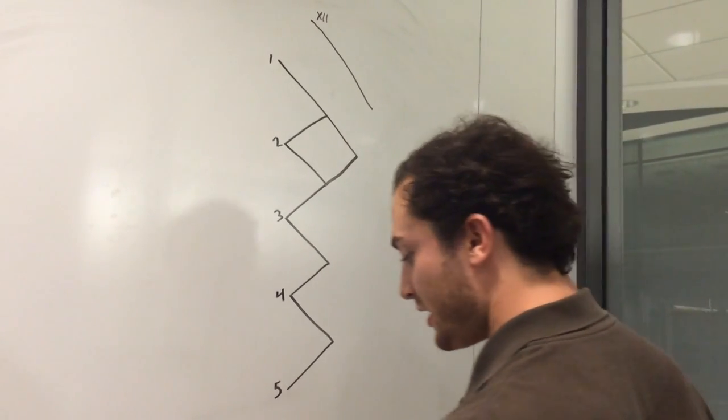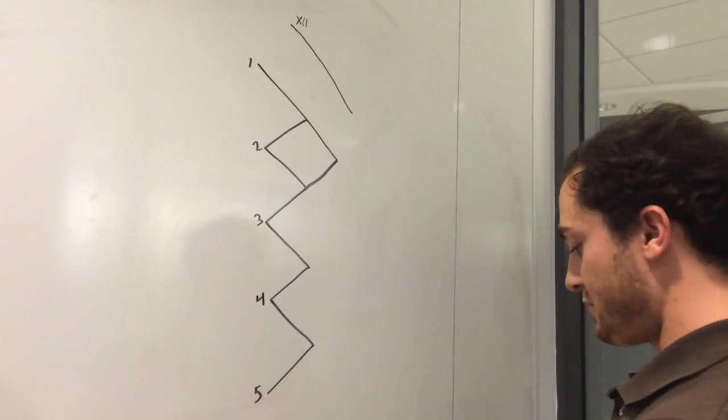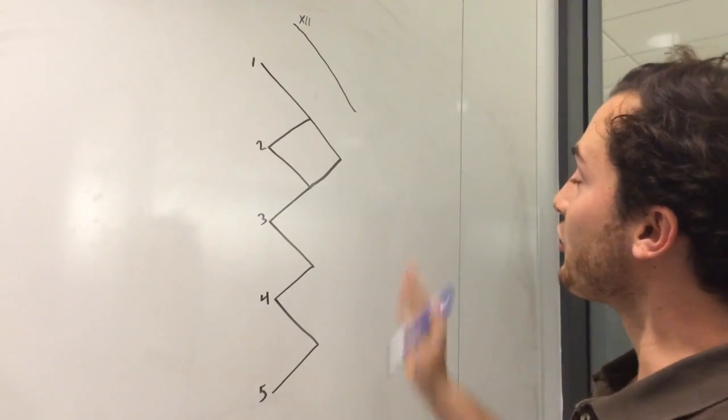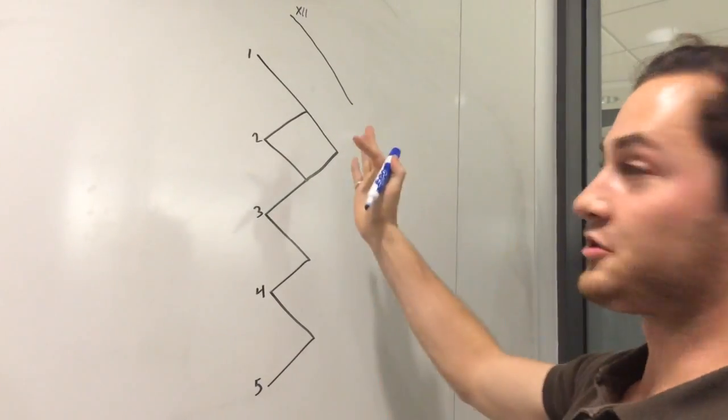And then I'm going to draw some motor branches. All the motor branches will be on this side, and the sensory will be on this side.